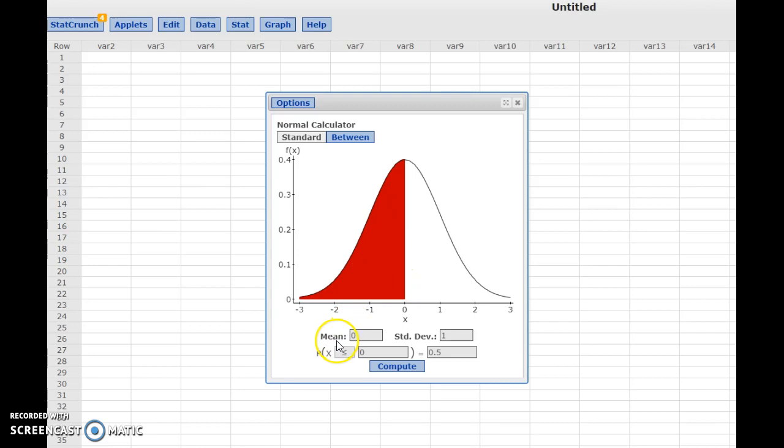That means a normal curve that has a mean of 0 and a standard deviation of 1. You can change the value of the mean and standard deviation by changing the values here and here in the designated fields.